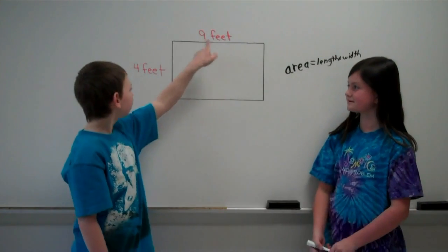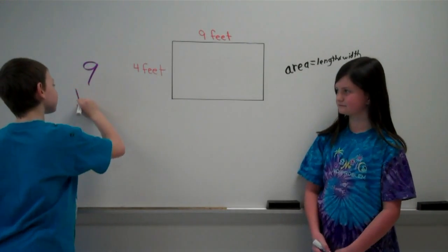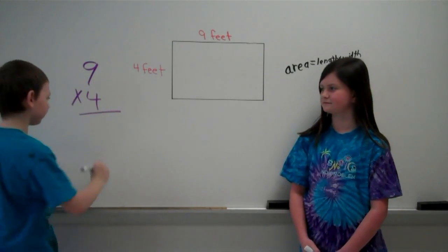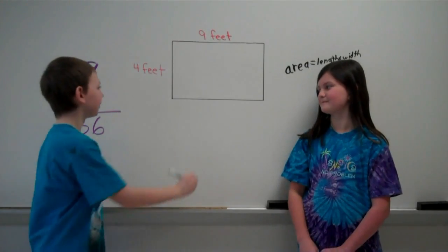So we have 9 feet times 4 feet. So that is 9 times 4 equals 36. So our answer is 36 square feet.